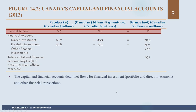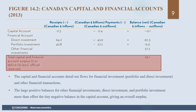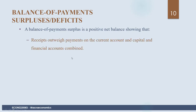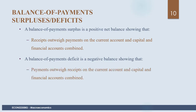The capital and financial accounts detail net flows for financial investment — portfolio and direct investment and other financial transactions. The large positive balances in other financial investments, direct investments, and portfolio investments more than offset the small deficit in the capital account, giving an overall surplus. A balance of payments surplus is a positive net balance showing receipts outweigh payments on the current account and capital and financial accounts combined. A balance of payments deficit is the reverse.